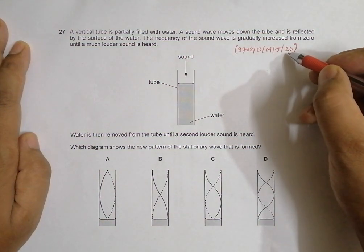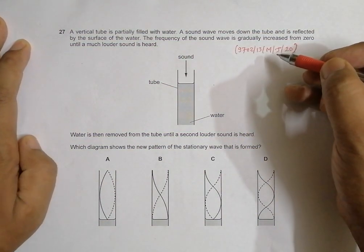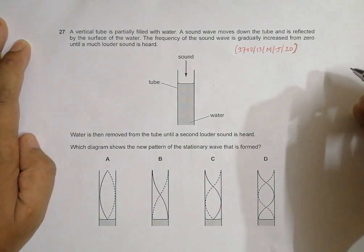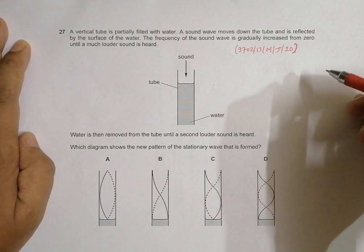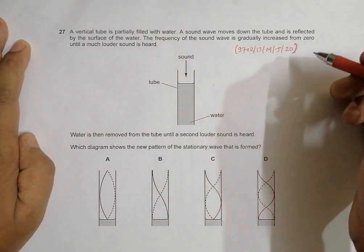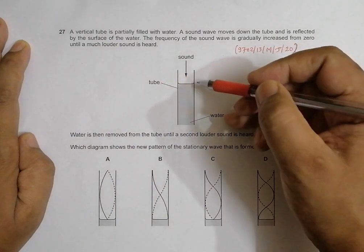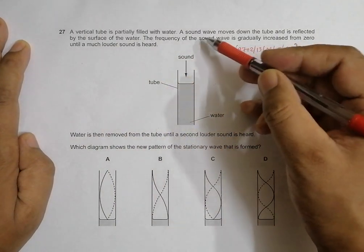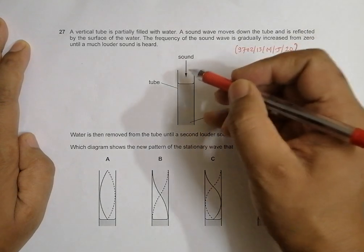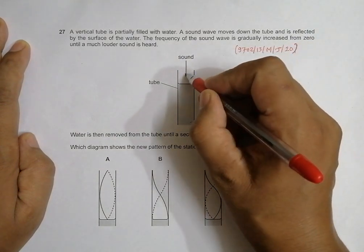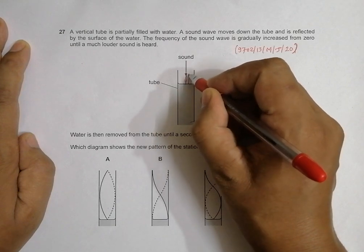This is a 2020 major paper 1, question number 27, as is clear from the diagram. The question belongs to the chapter on superposition of waves. A vertical tube is partially filled with water, a sound wave moves down the tube and is reflected by the surface of the water.